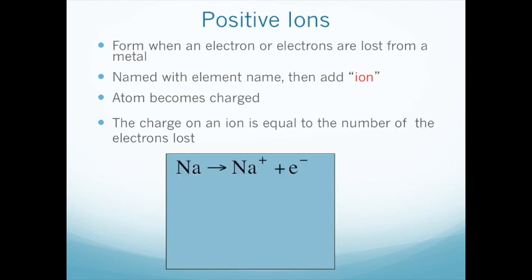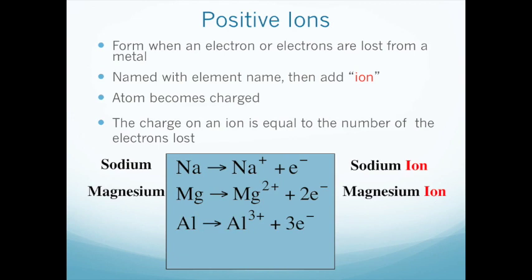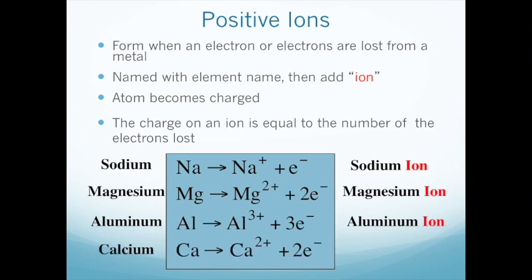Here are some examples. Sodium loses one electron to become sodium plus — a sodium ion. Magnesium loses two electrons to form a magnesium 2+ ion. Aluminum loses three electrons, because it's in group 3A, to form an aluminum ion. Calcium likewise loses two electrons and forms calcium ions. These are pretty straightforward but good to know.